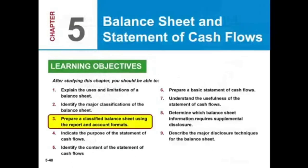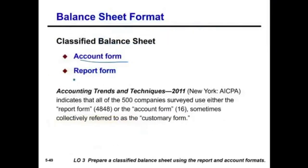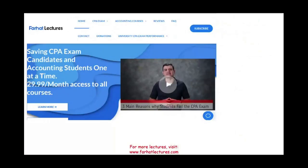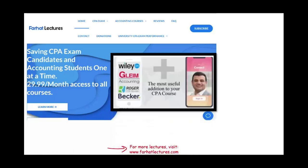When preparing a classified balance sheet, you can use either the report form or the account form — the AICPA indicates that all 500 survey companies use one of these two, sometimes collectively called the customary form. The presentation meets the objective of financial reporting to provide information about the entity's claims and resources. At the end of this recording, please visit my website farhatlectures.com, like this recording, share it. If you have a CPA prep course, I serve as a supplement.